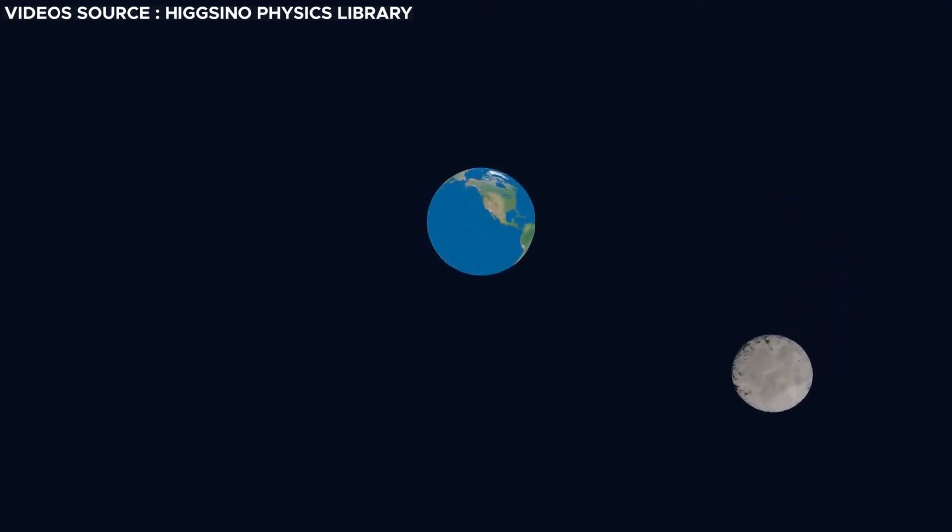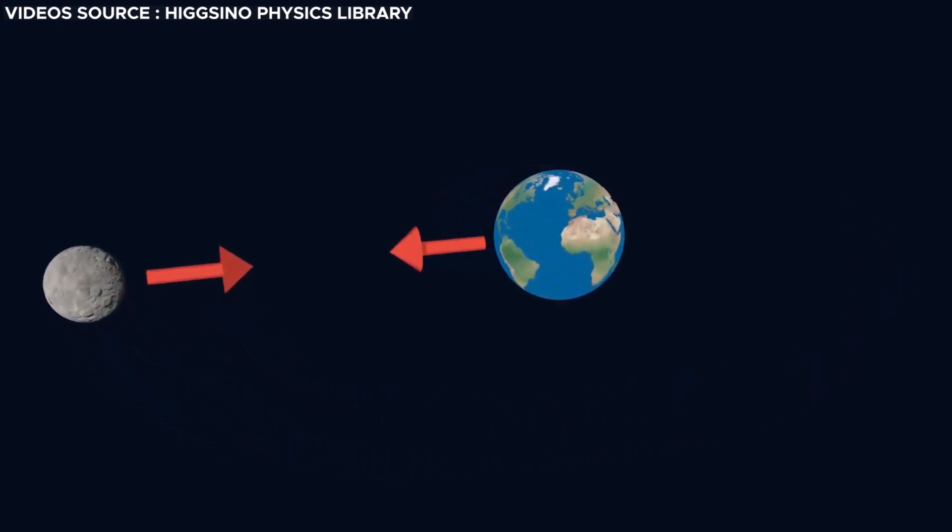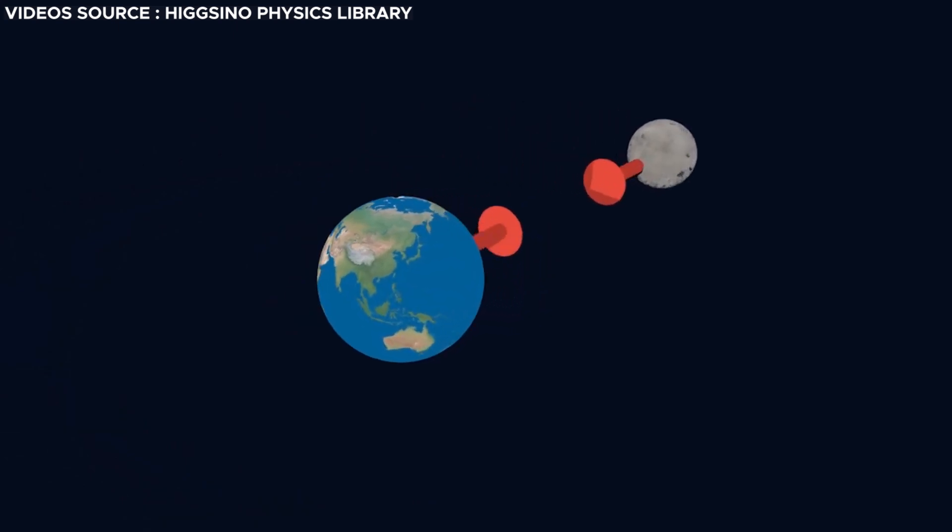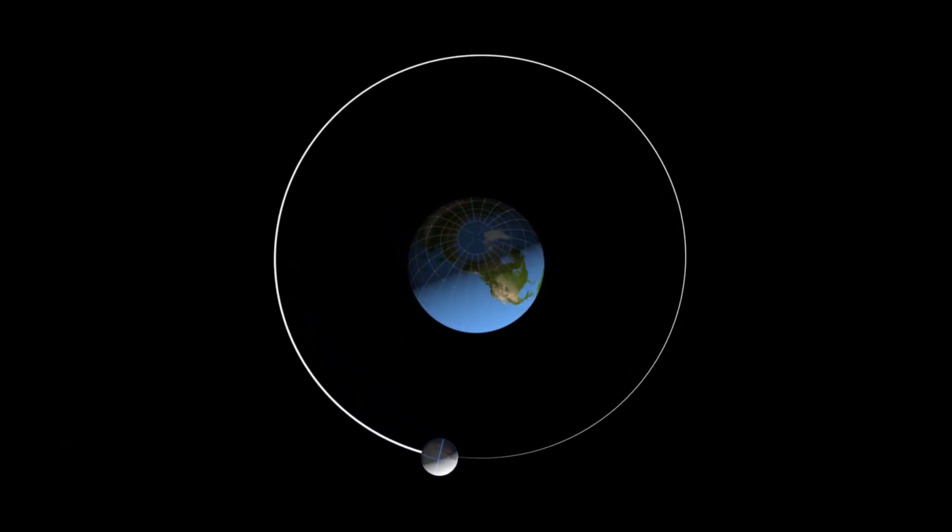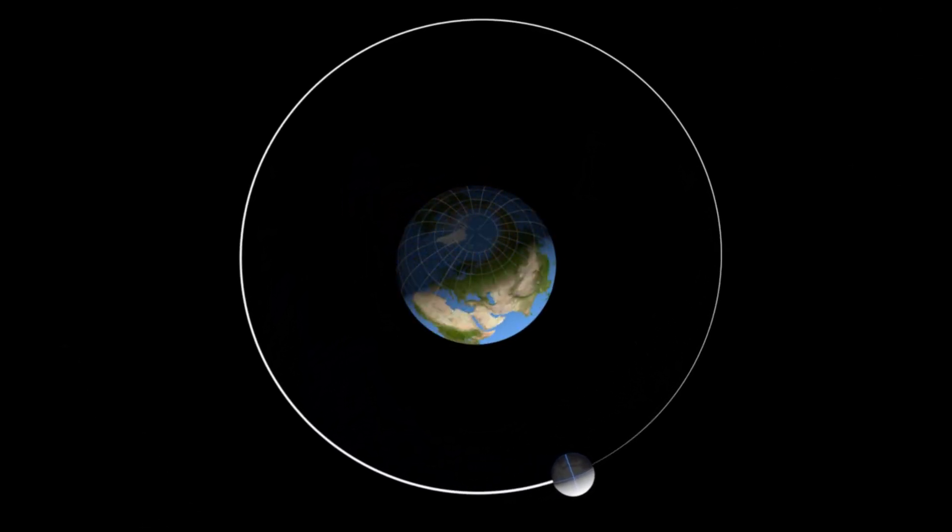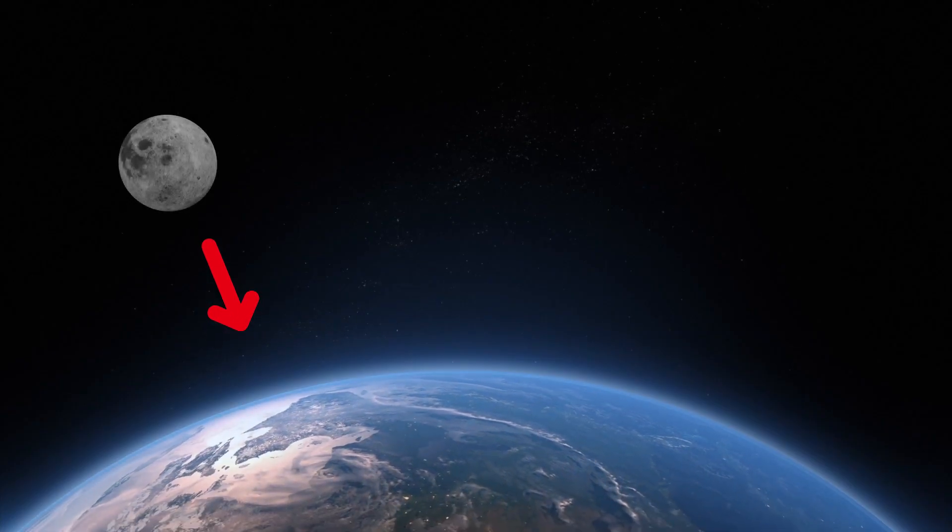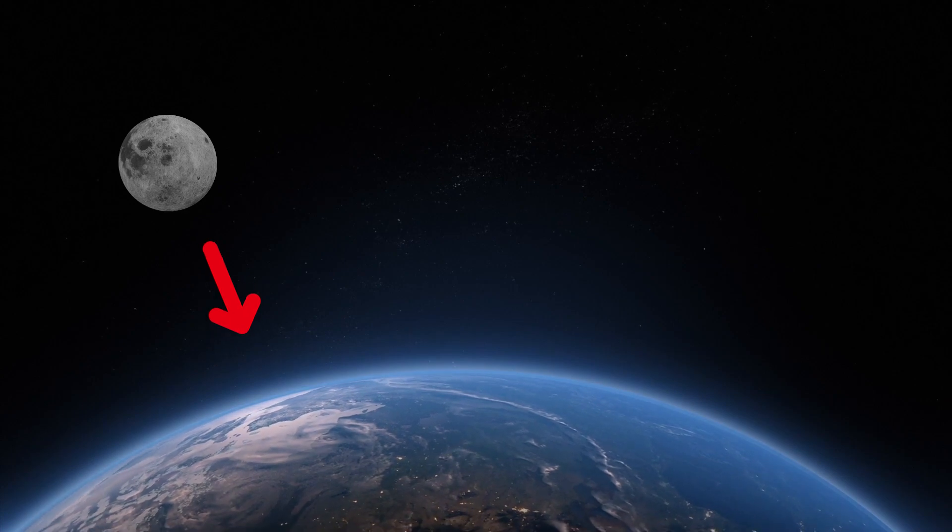To understand the mechanics at play, it's essential to understand the fundamental principles of gravity and orbital dynamics. While the moon completes its orbit around Earth, it exerts a gravitational force on our planet. Simultaneously, Earth reciprocates by exerting its own gravitational pull on the moon.